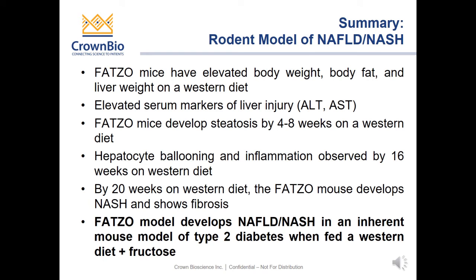In summary, the FATSO mice have elevated body weight, body fat, and liver weight on a Western diet. We show elevated serum markers of liver injury, and they develop steatosis by 4 to 8 weeks on a Western diet. Hepatocyte ballooning and inflammation was observed by 16 weeks on Western diet, and by 20 weeks on Western diet, the FATSO mouse develops NASH and shows signs of fibrosis. In conclusion, our FATSO model develops NAFLD NASH as an inherent mouse model of type 2 diabetes when fed a Western diet and fructose.